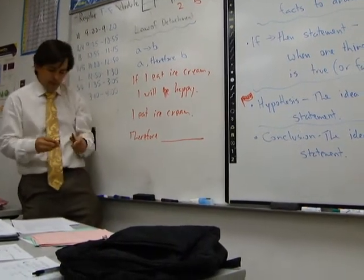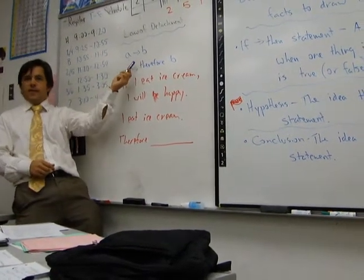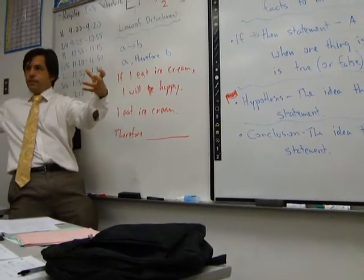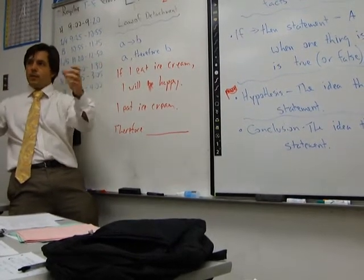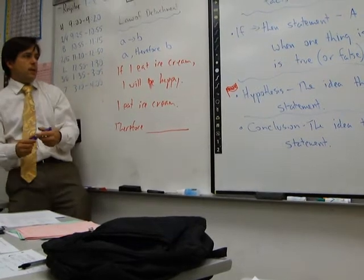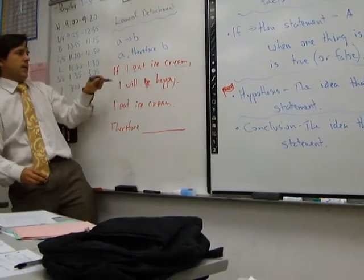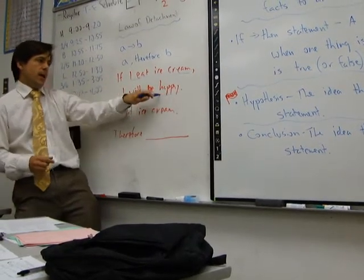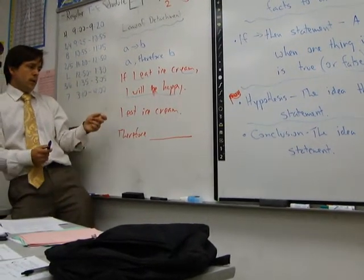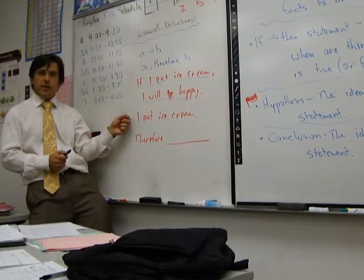Okay, the law of detachment is very simple. It basically takes the two things that are in the if-then statement and separates them. It's sort of the backwards of the syllogism. So, what's our A here? I eat ice cream. Don't use the if. I eat ice cream is our A. What's our B? I will be happy. So what am I restating right here? I eat ice cream. So that's our A, right?